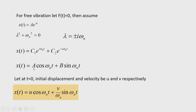This solution has two constants of integration A and B found from initial conditions. Assuming initial displacement u and initial velocity v at t = 0, we get x(t) = u·cos(ωnt) + (v/ωn)·sin(ωnt). This is a very important relationship used in both discrete and continuous system problems. When initial velocity is 0: x(t) = u·cos(ωnt); when initial displacement is 0: x(t) = (v/ωn)·sin(ωnt) — this situation occurs in impulsive motion.